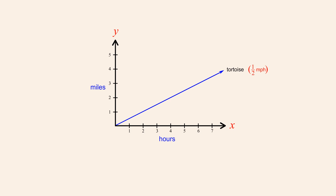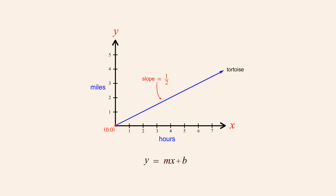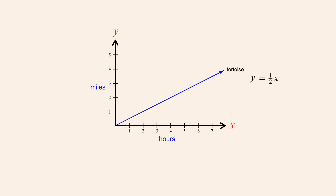We saw in the chapter on solving motion problems with linear equations that if we graph distance as a function of time for an object traveling at a constant speed, the slope of the graph will be equal to the speed of the object. So the slope of this line is one-half. Since we know that this graph intercepts the y-axis at the origin, we can use the slope-intercept form to write the equation for this line. The value of m is the slope one-half, and the value of b is the y-intercept zero. Eliminating the zero, the equation for this line is y equals one-half x.